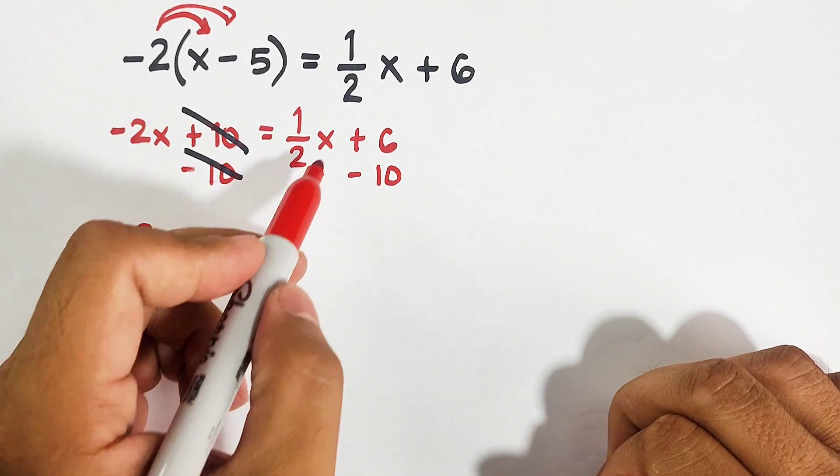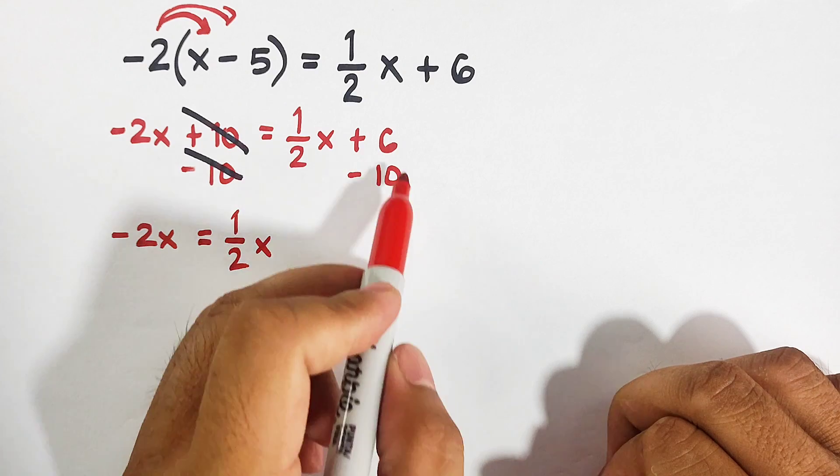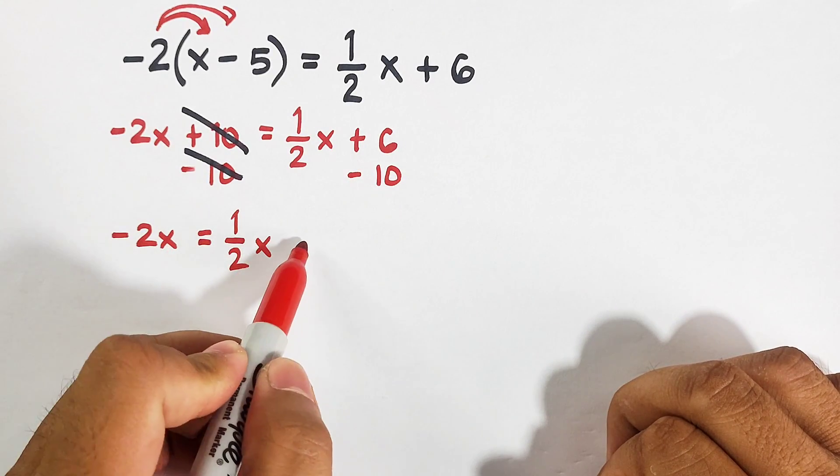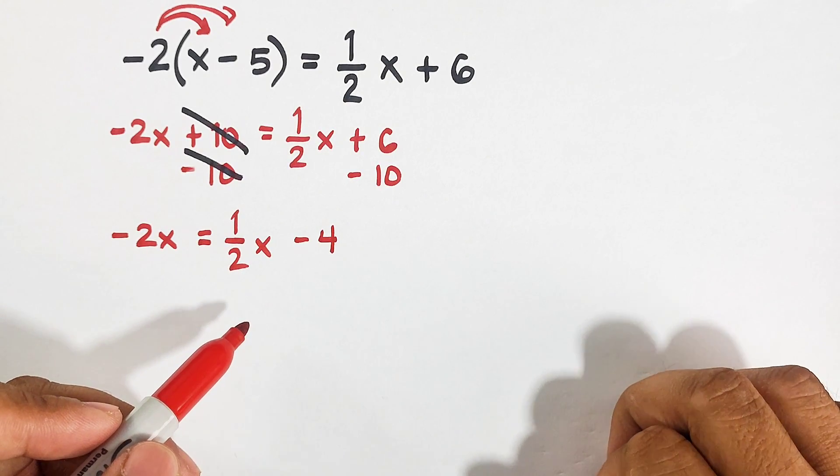Then copy equal, copy one-half x. And here, 6 minus 10 is negative 4. So we are done with the constants.